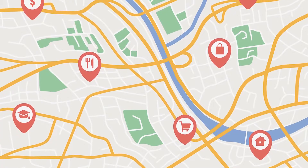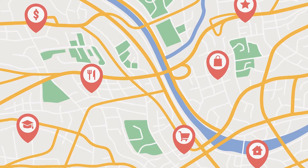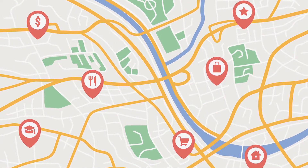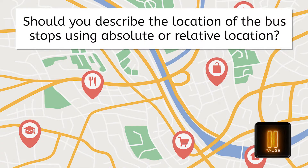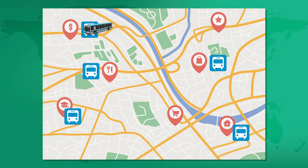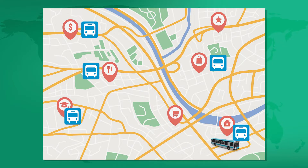Now imagine you're a geographer designing a new public transportation system in a city, planning bus stops that are convenient for residents. Should you describe the location of the bus stops using absolute or relative location? Describing where bus stops will be located relative to other city landmarks will be more useful for city residents — like saying a bus stop should be next to the school or across the street from the mall.